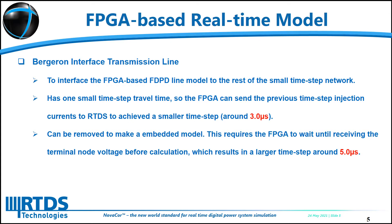Since the interface line has a travel time of one small timestep, the FPGA can send the previous timestep injection currents to the simulator at the very beginning of each simulation timestep, so that a smaller simulation timestep of around 3 microseconds can be achieved. Alternatively, this bridging line can be removed from the FPGA-based line model to make this an embedded model. This means the FPGA has to wait until receiving the terminal voltage before starting its calculation, which results in a larger simulation timestep of around 5 microseconds.